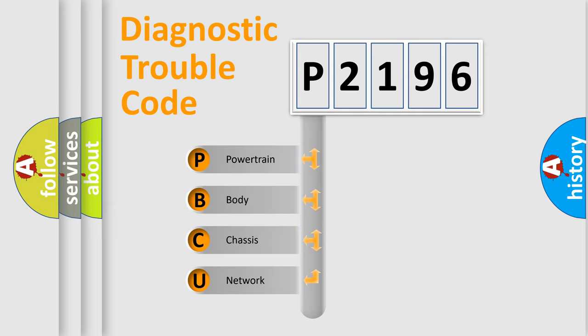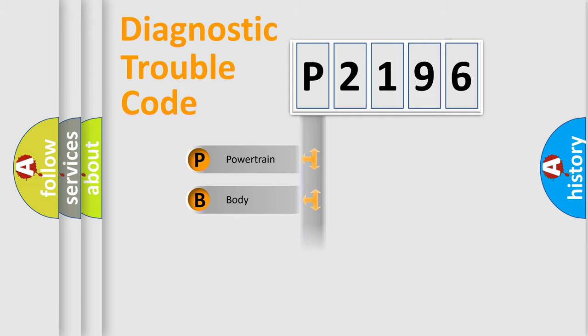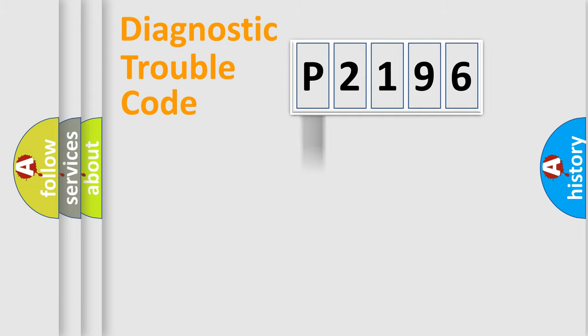We divide the electric system of the automobile into four basic units: Powertrain, Body, Chassis, and Network.